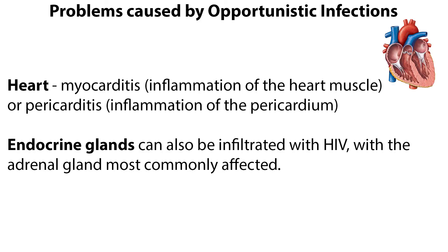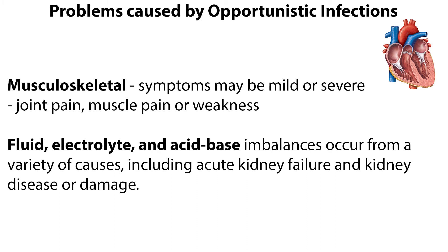Opportunistic infections can also affect the heart by producing myocarditis, or inflammation of the heart muscle, or pericarditis. Though not as common, endocrine glands can also be infiltrated with HIV, with the adrenal gland most commonly affected. Musculoskeletal symptoms are common and may be mild or severe; joint pain is often seen with acute infection or may result from drug therapy, and muscle pain or weakness may result from decreased appetite and loss of muscle mass.